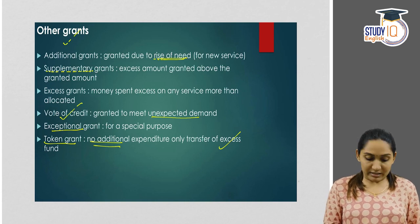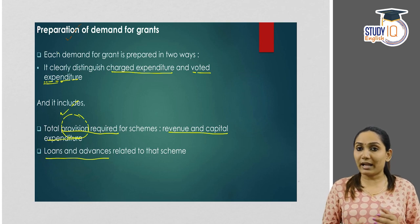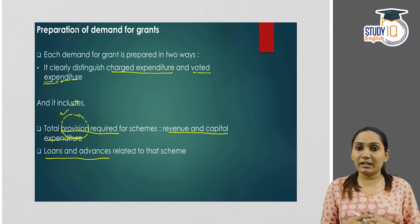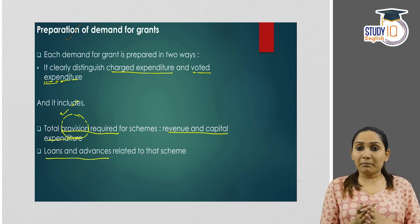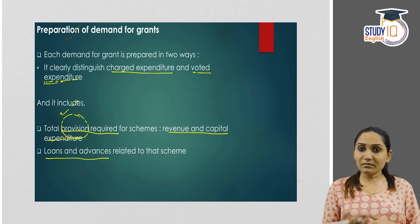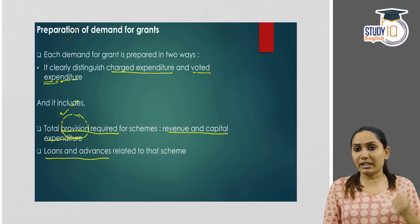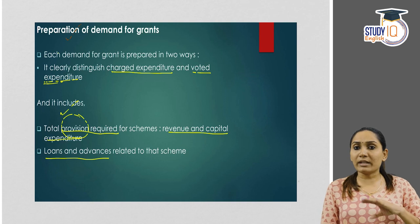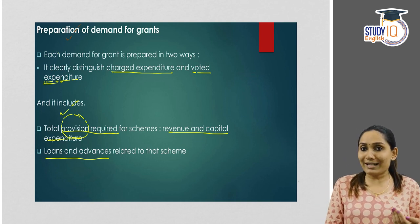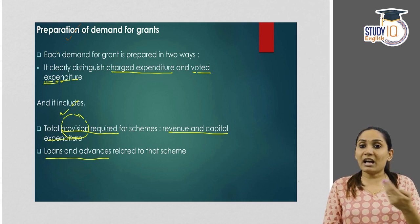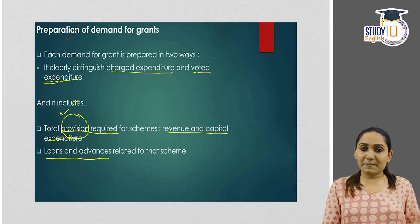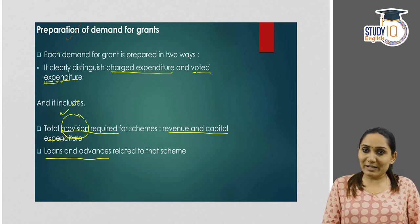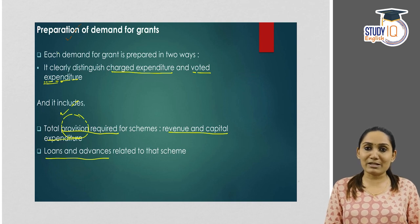To summarize, demand for grants is a part of the budget documents presented in parliament along with the annual financial statement, and it is mandated by the Constitution. Any amount to be withdrawn from the Consolidated Fund of India needs parliament's approval. There are two types: charged expenditure, which requires no parliament vote but discussion is allowed, and voted expenditure, which must be approved by parliament. It is presented in the Lok Sabha with the prior recommendation of the President. Thank you so much for watching. Wishing you all the very best.